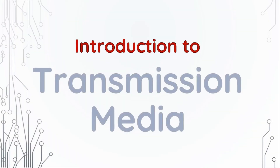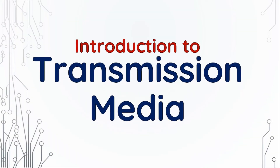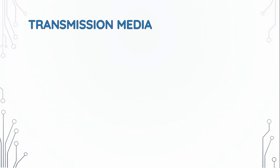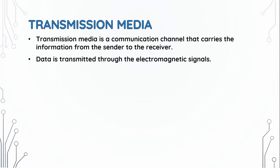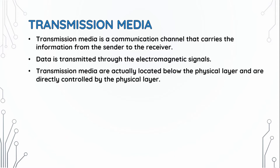Today I am going to introduce Transmission Media. Transmission Media is a communication channel that carries the information from the sender to the receiver. The data is transmitted through the electromagnetic signal. Transmission Media is actually located below the physical layer and directly controlled by the physical layer.